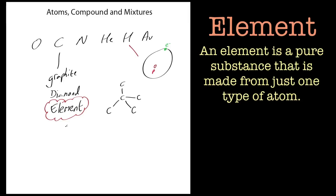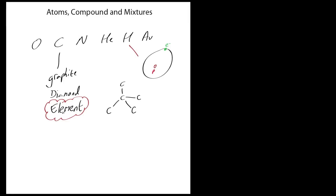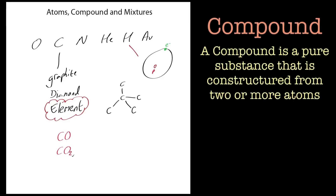Atoms can react together to form compounds. A compound is not a pure form of just one atom — it's not an element. If we take carbon and oxygen, you might have heard of CO, that's carbon monoxide, or CO₂, that's carbon dioxide. This is a compound.